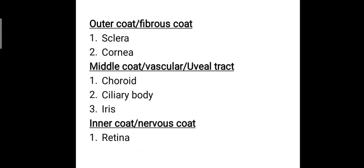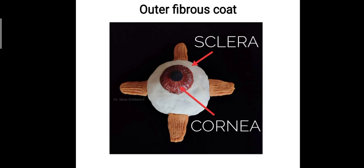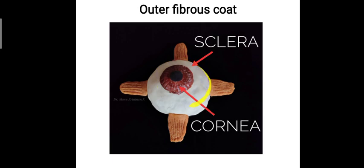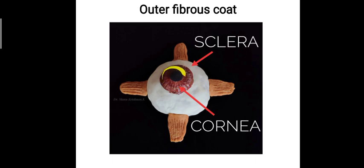We will be looking only into the outer coat, that is the fibrous coat, which is composed of two parts: the sclera and the cornea. Here we have a model where this white color area represents the sclera, and the transparent part where the brown iris is visible is called the cornea. So the transparent part of the outer fibrous coat is the cornea, while the opaque white part is termed the sclera.